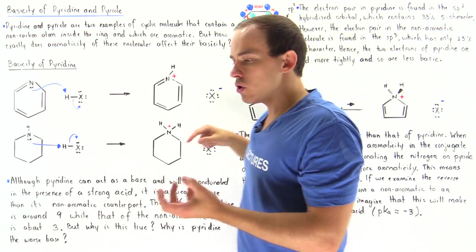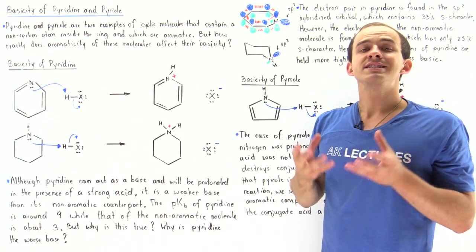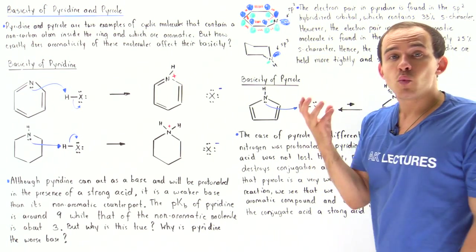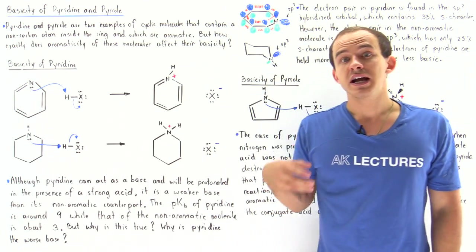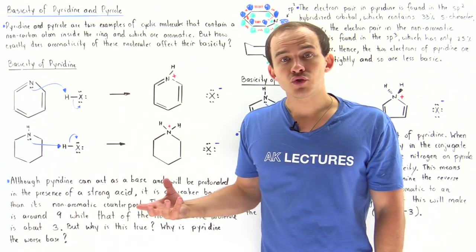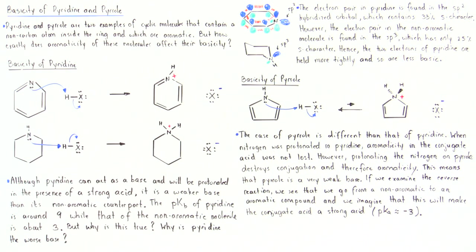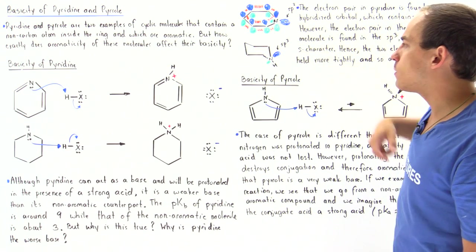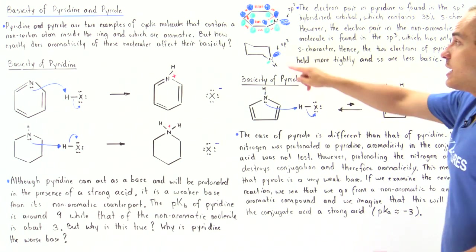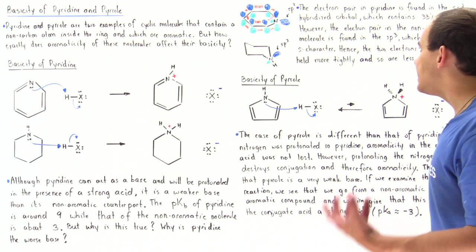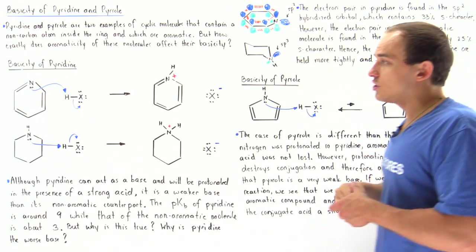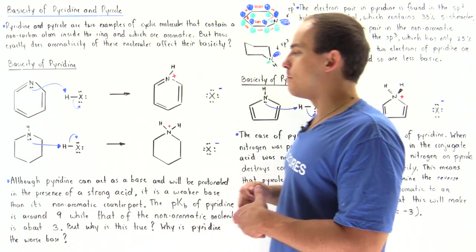The sp3 orbital contains 25% S character, so it has less S character than the sp2 orbital. Whenever we have less S character, that orbital will hold electrons not as tightly. So basically the two electrons of pyridine are held much more tightly than the two electrons in the non-aromatic counterpart. Because these electrons in pyridine are held more tightly, it will act less as a base than the non-aromatic molecule.